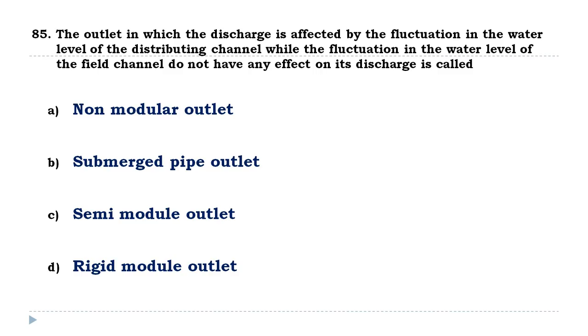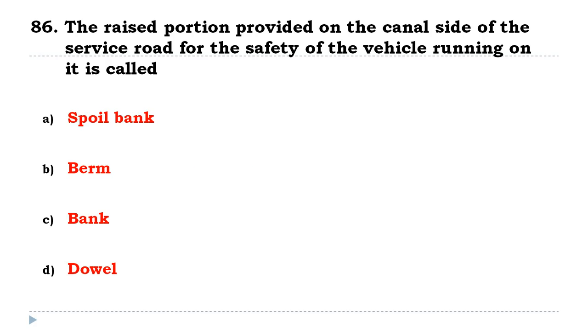The outlet in which the discharge is affected by the fluctuations in the water level of the distributing channel while the fluctuations in the water level of the field channel do not have any effect on its discharge is called a semi-modular outlet.